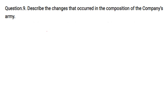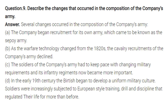Describe the changes that occurred in the composition of the company's army. The company began recruitment for its own army, known as the Sepoy Army. As warfare technology changed from the 1820s, cavalry recruitment declined. Soldiers had to keep pace with changing military requirements, and infantry regiments became increasingly important. In the early 19th century, the British began to develop a uniform military culture — soldiers were subjected to European-style training, drill, and discipline that regulated their life more than before.